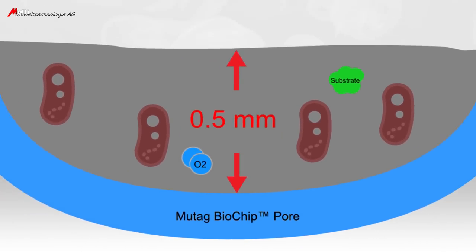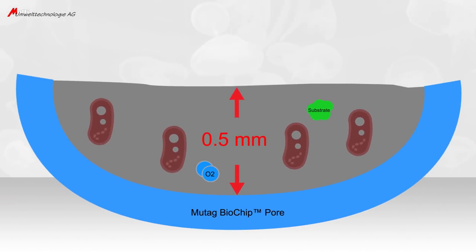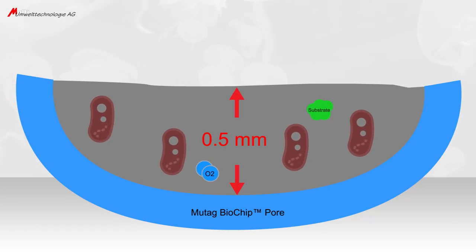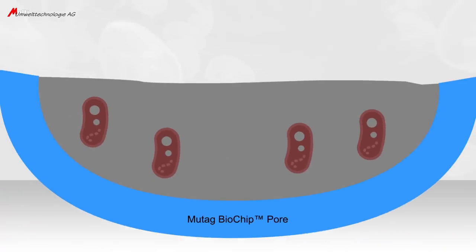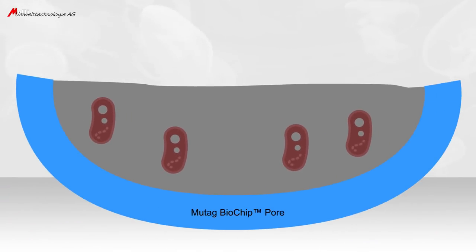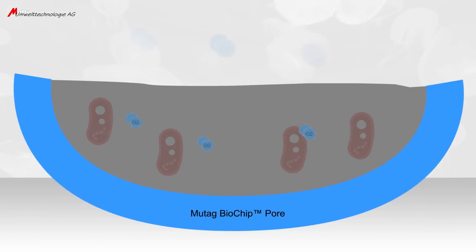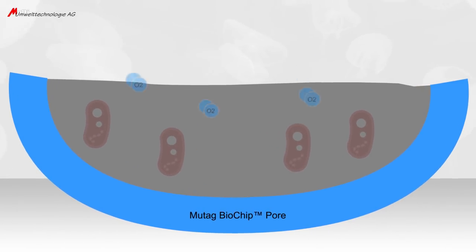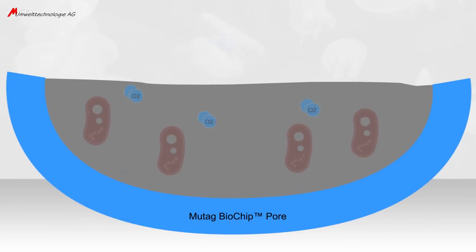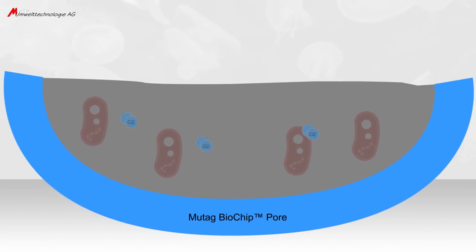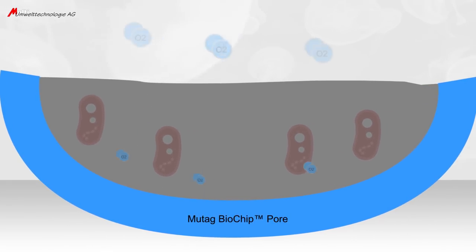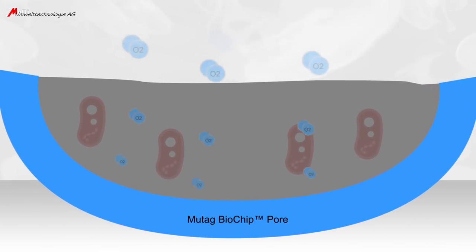While diffusing through the supply channel of 0.5 mm through the particular biofilm layers, for example, the oxygen is being consumed by the organisms. Consequently, deeper zones and layers below 0.5 mm cannot be supplied with oxygen, since the oxygen was already consumed by the layers situated further above.